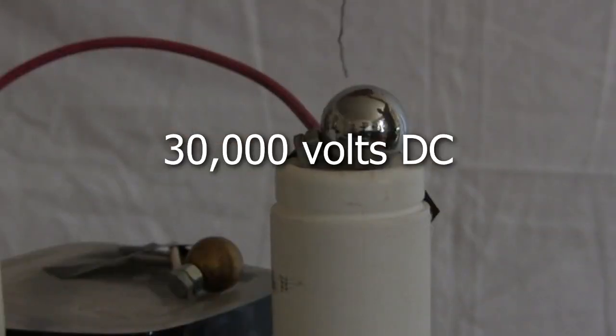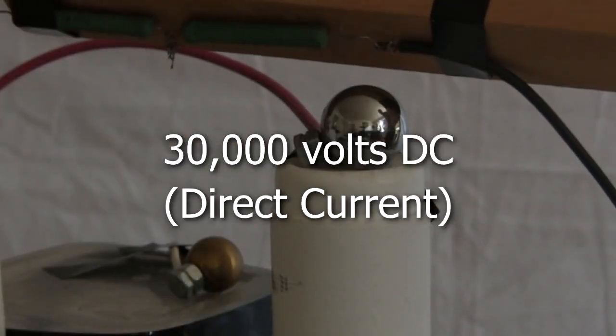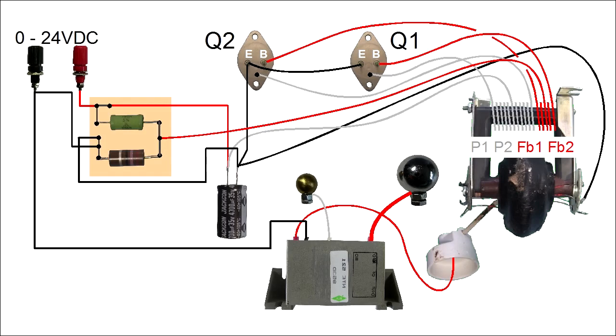Note that this power supply puts out up to 30,000 volts DC or direct current. Here's the circuit for the power supply. Notice that its input is 0 to 24 volts DC. I'll show you later where to get that.